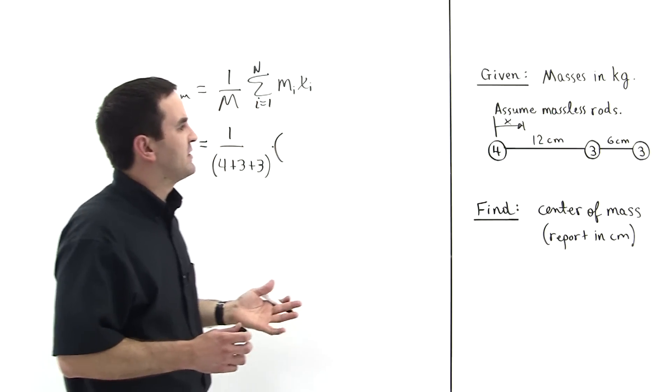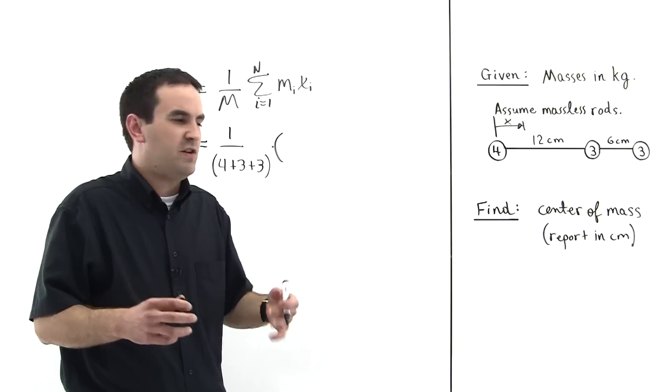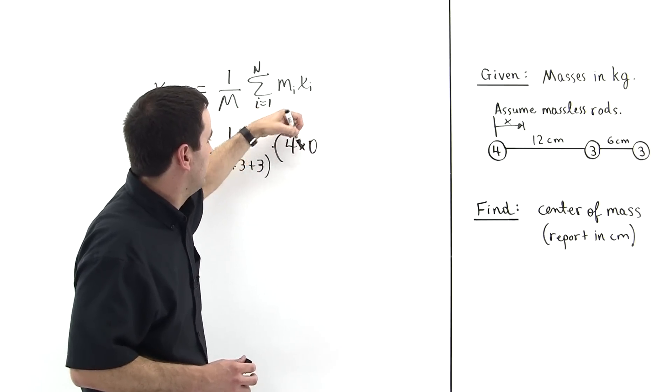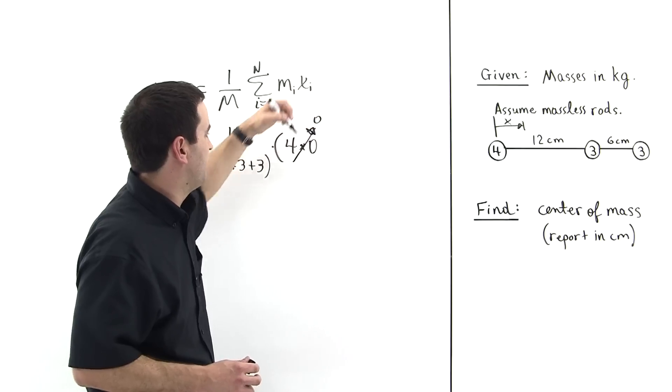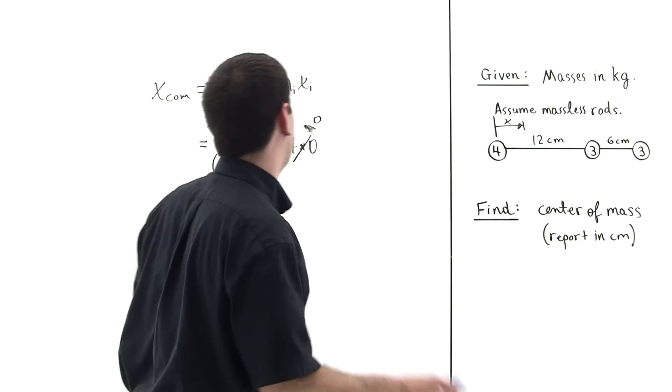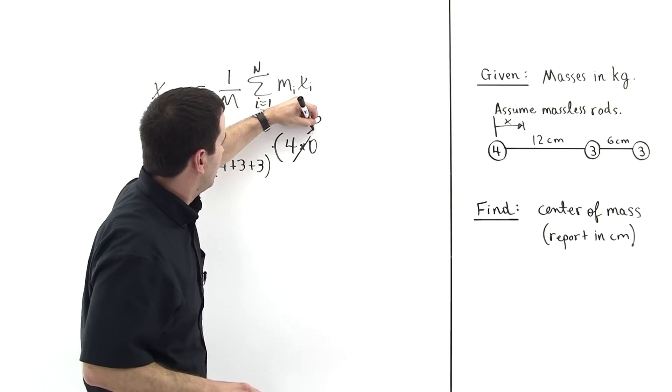So the four kilogram mass we've chosen to be the origin, so it's at an x coordinate of zero. So we would just say four times zero. So this term goes away. So we see how convenient that is to pick one of the masses to be the place where the origin is.